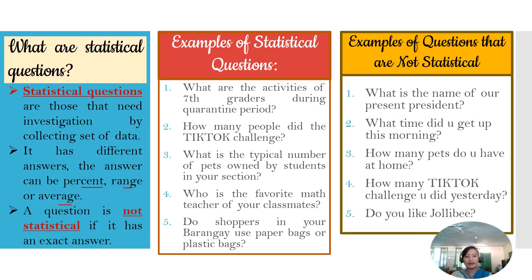On the other hand, a question is not statistical if it has an exact answer. Just like this example. The exact answer for this is Rodrigo Duterte. Number two, it depends. Let's say 6 a.m. You woke up at 6 a.m. Number three, you can just answer with numbers. There is an exact answer. But for these statistical questions, we have to ask people or we have to investigate before we can answer them. So that's the difference between the two.